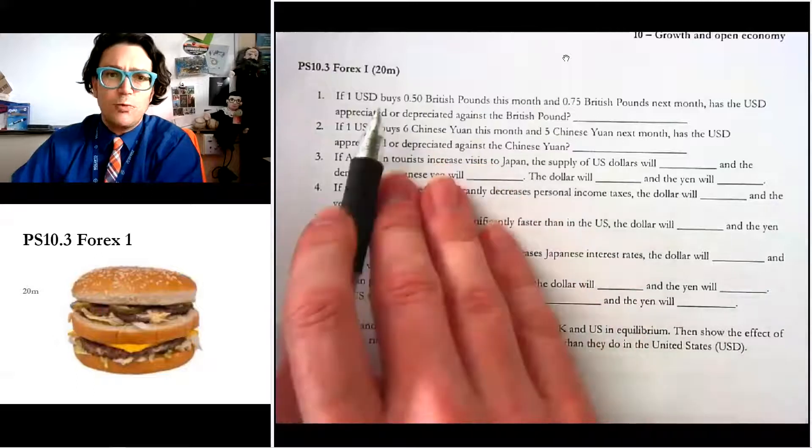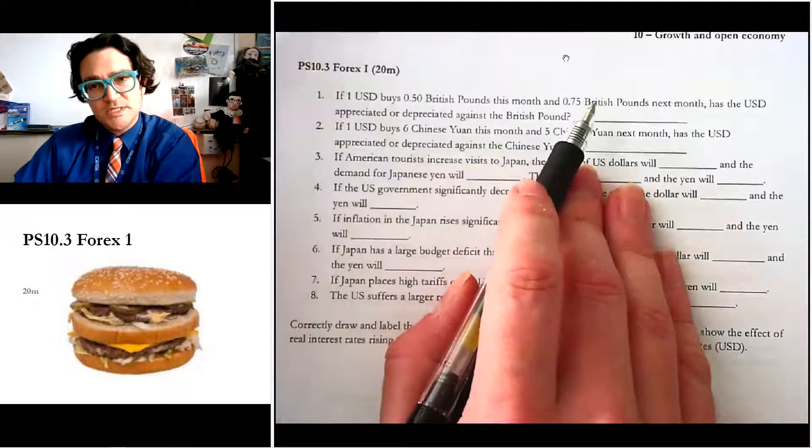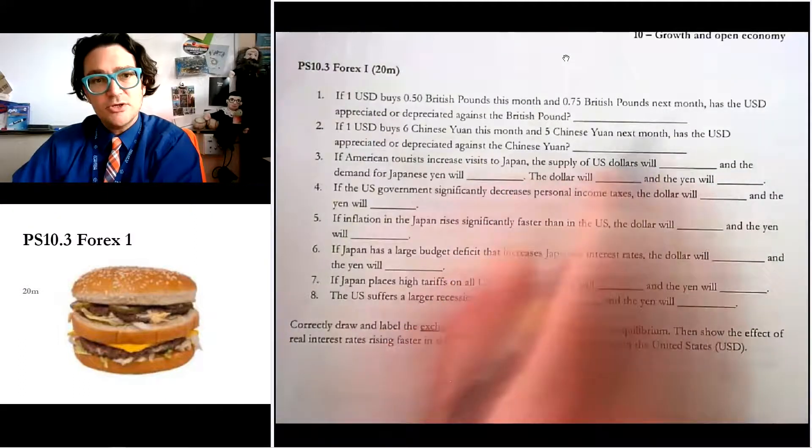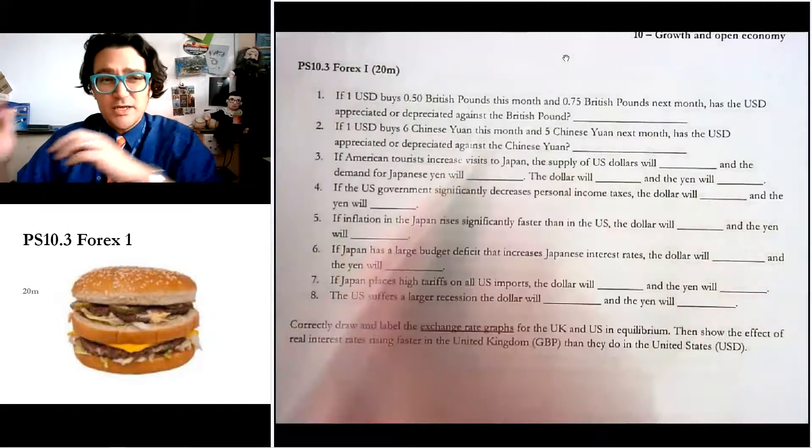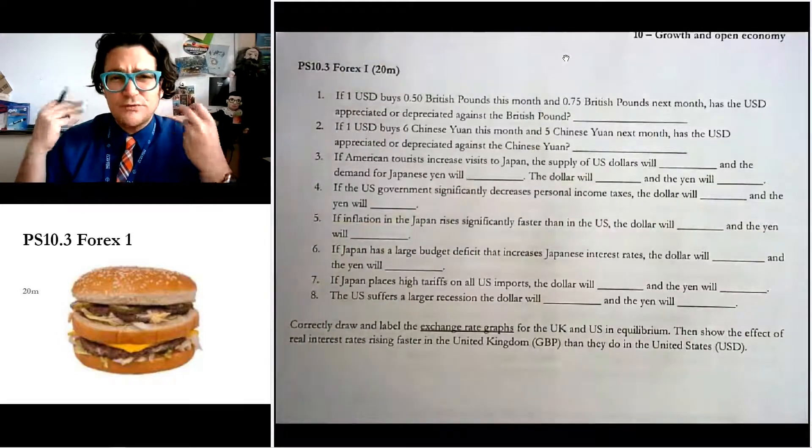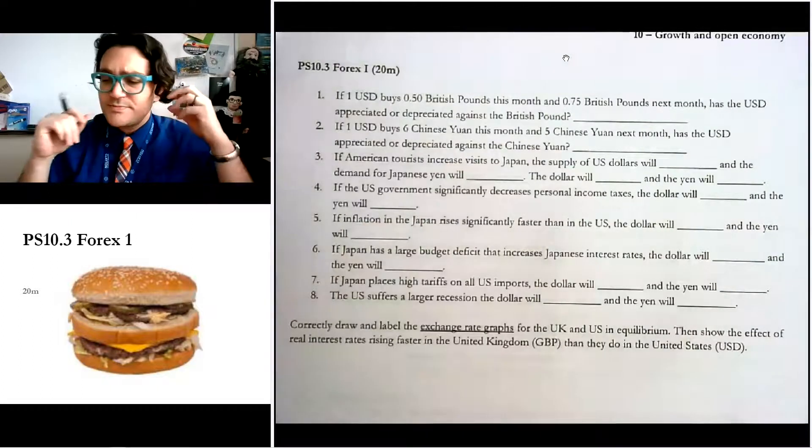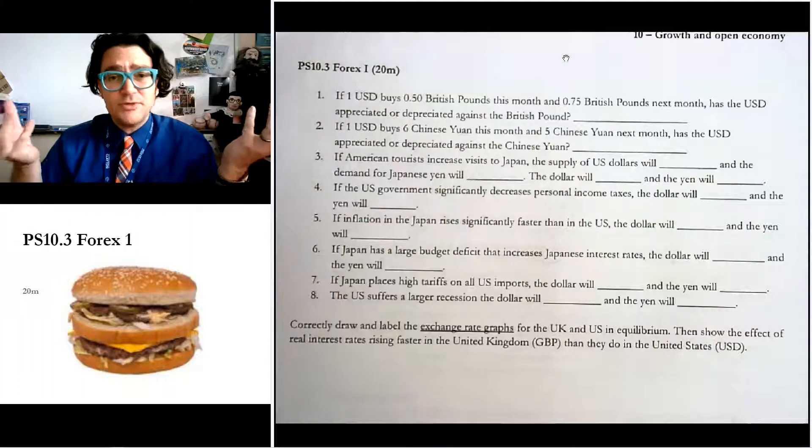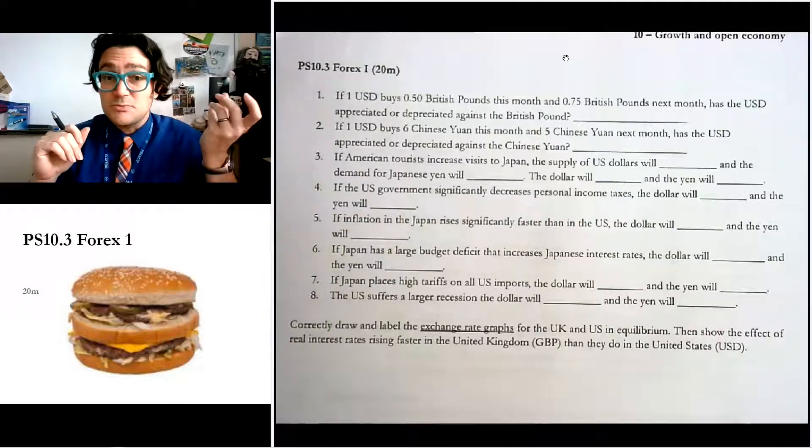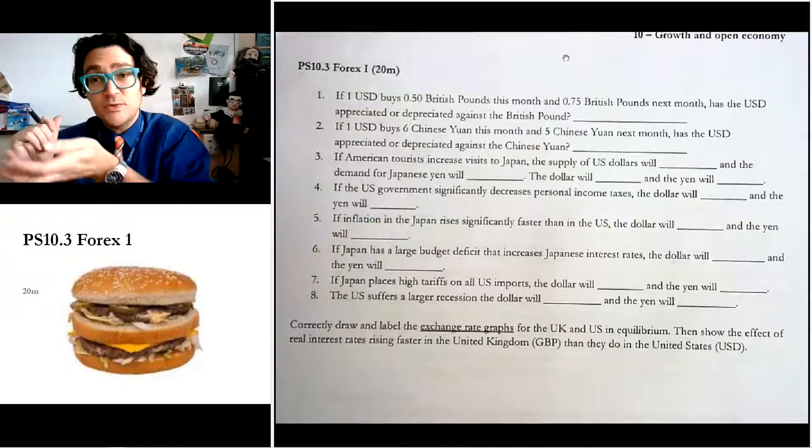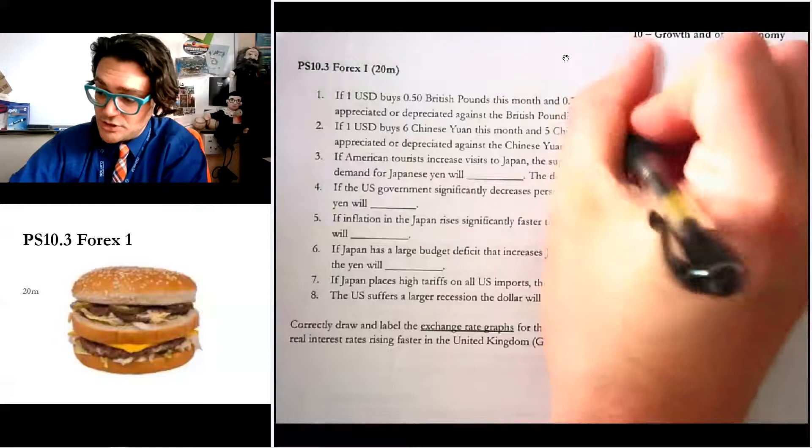So if $1 buys 0.5 British pounds this month, and then buys 0.75 British pounds next month, has the dollar appreciated or depreciated against the British pound? And so at root, this is really just testing like use your vocabulary work here. Which one became more valuable? Which one buys more of the other one? And the answer to that is, well, the dollar, it buys more of the other ones. So the dollar went up in value. So it appreciated.